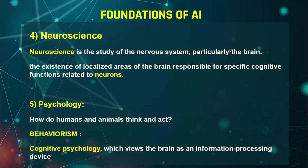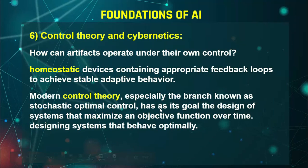Going deeper into psychology, we have cognitive psychology, which views the brain as an information processing device. Then we have control theory and cybernetics — controlling the machine. Homeostasis means devices containing appropriate feedback loops to achieve stable adaptive behavior. Based on the experiences the machine gains from its environment, it generates behavior using stable homeostatic mechanisms in a particular situation.